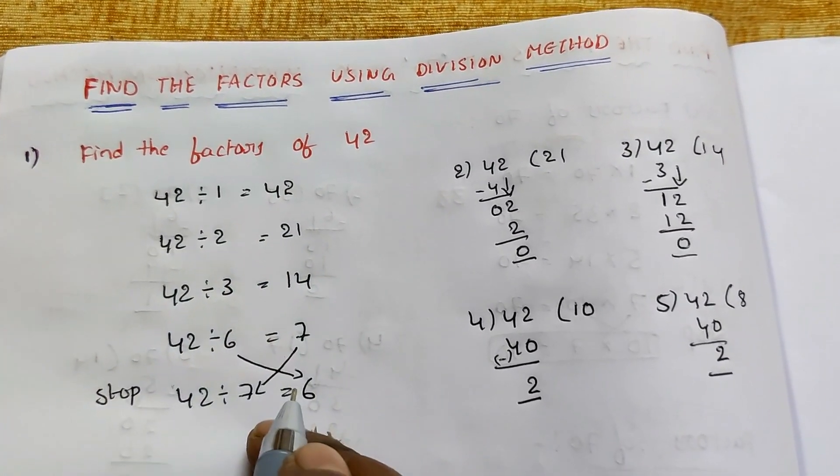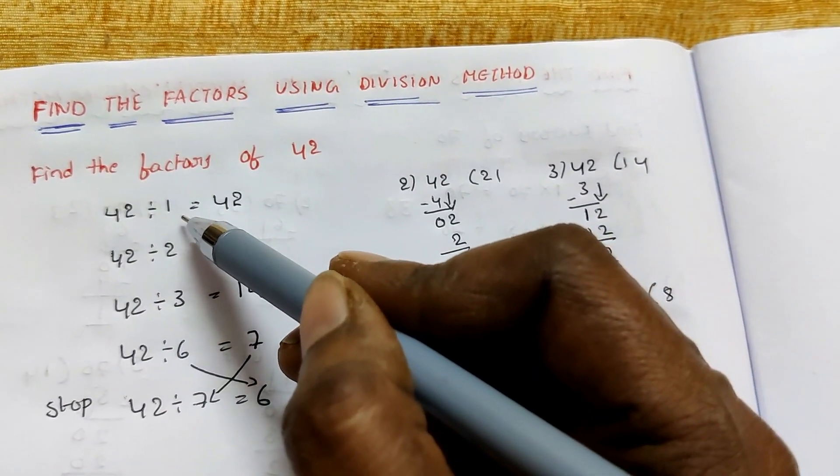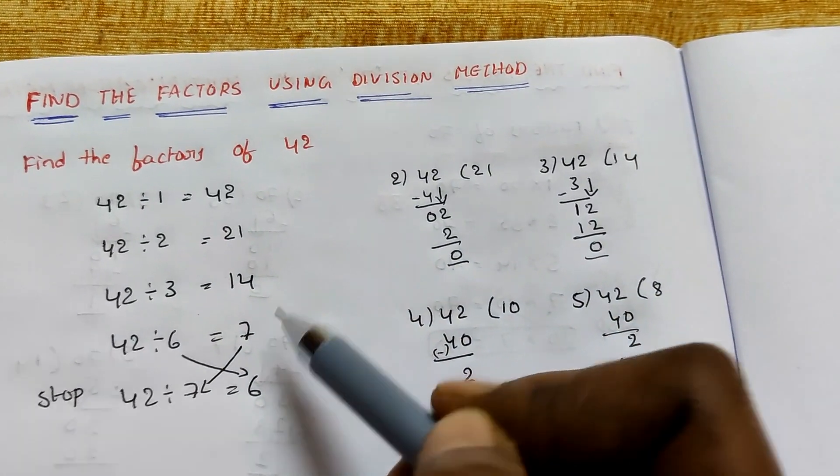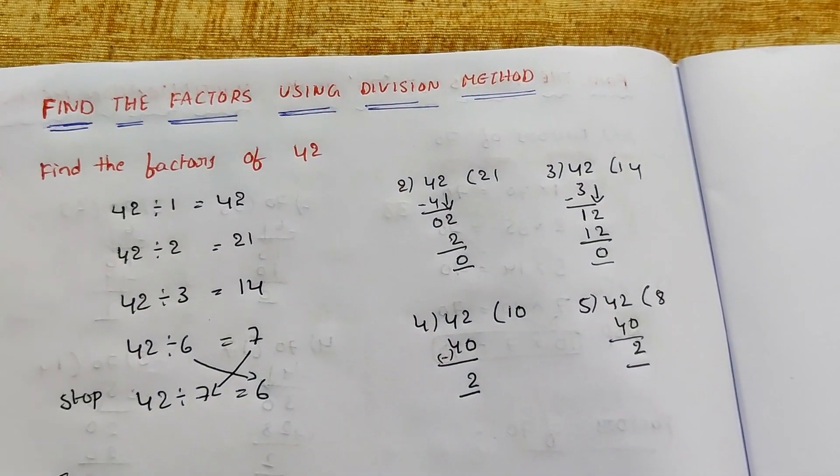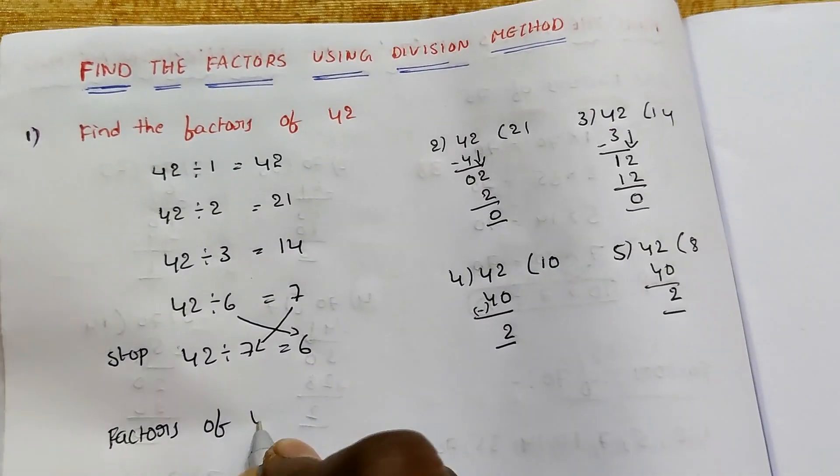These are called factors of 42. The factors are the divisors and quotients. Factors of 42 are: